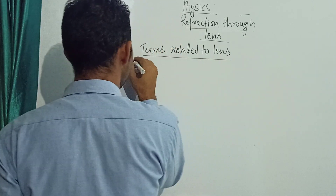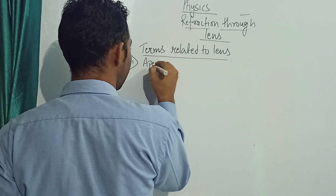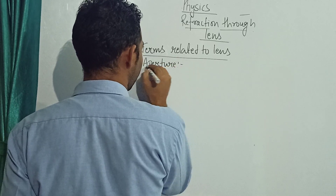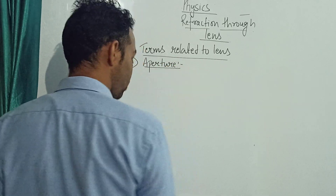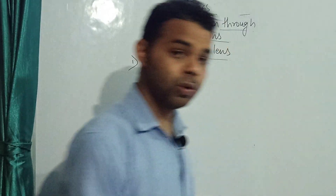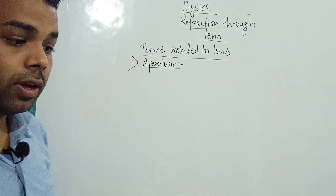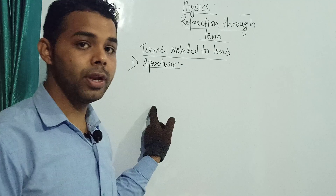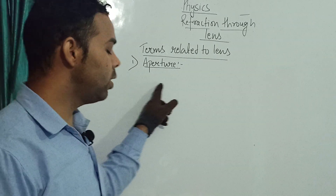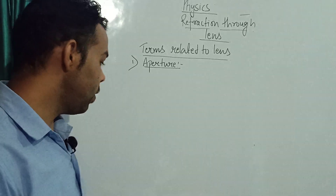The first term is aperture. What is aperture? We have studied aperture in mirrors also. Similarly, we are going to study aperture here for lenses.